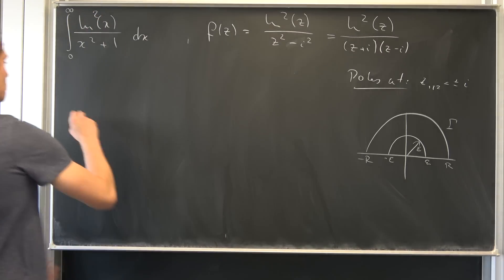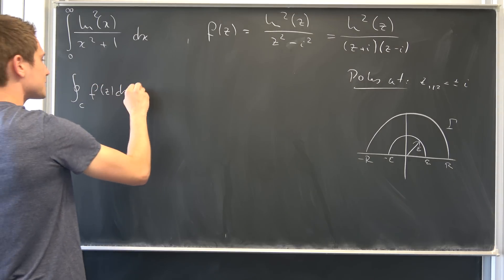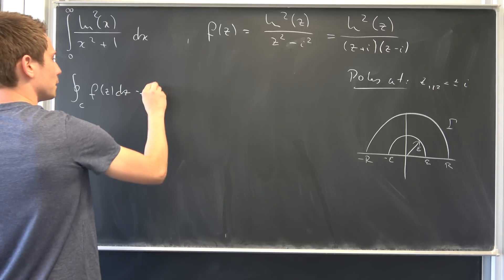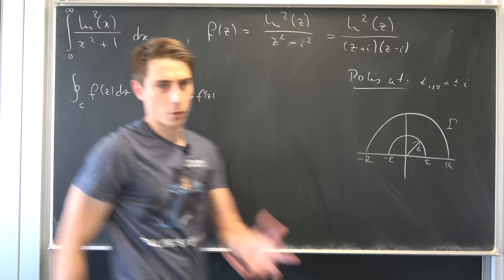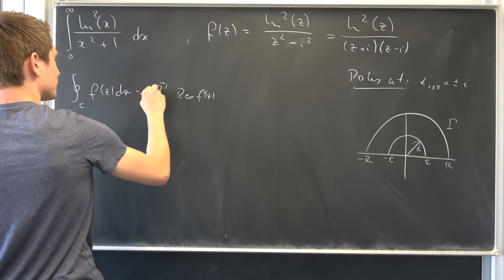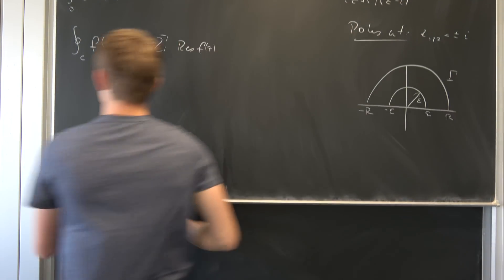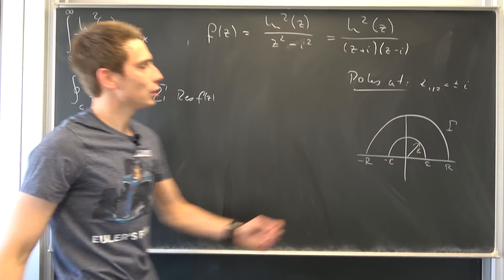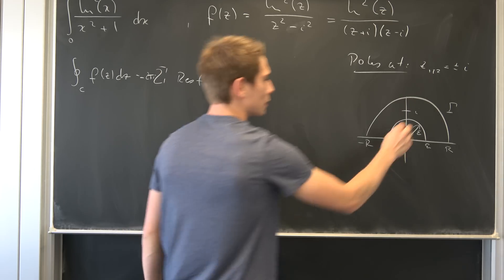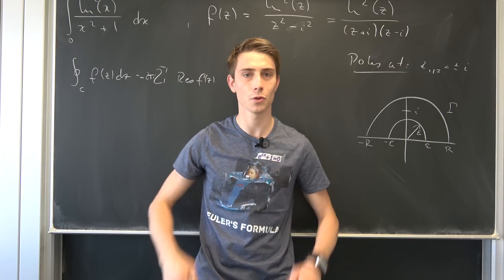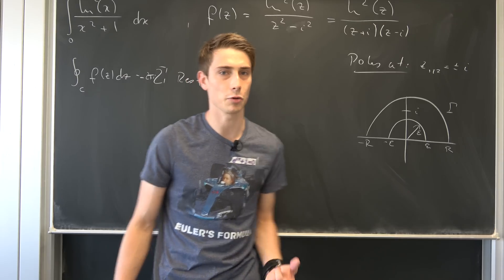Now we can formulate our formula for the contour integral. On the one hand, we have the contour integral of f(z) dz being equal to 2πi times the sum of the residues of f(z). But what exactly are our residues? Well, we are only dealing with i in the upper half of the complex plane — that's the only pole we are going to hit right here. I'm not against poles; I really like poles. Germany is close to Poland, but we really need to hit this i, this pole.